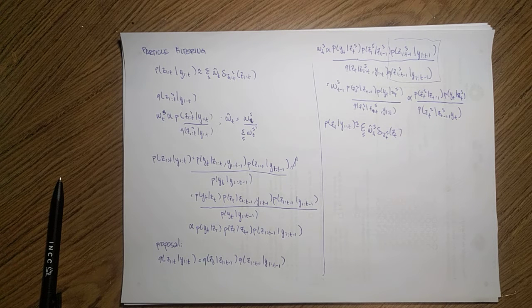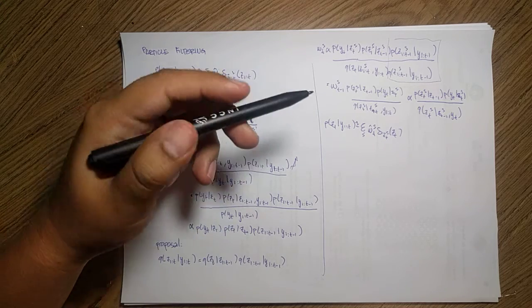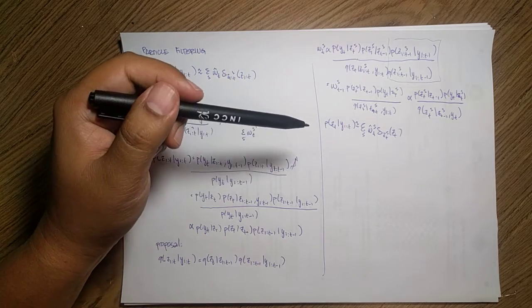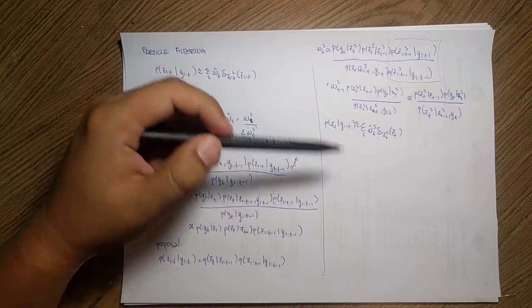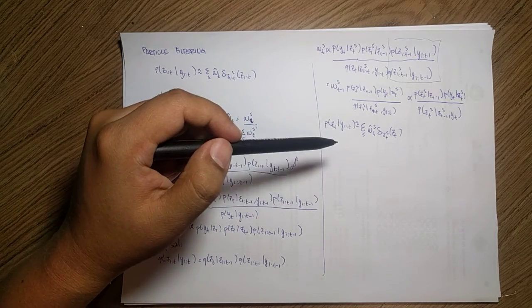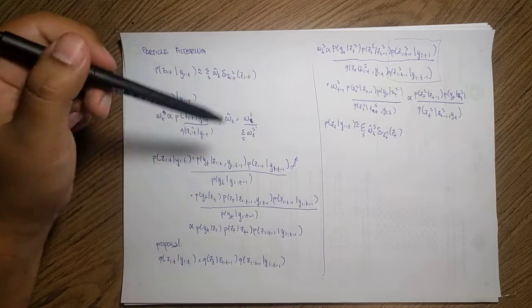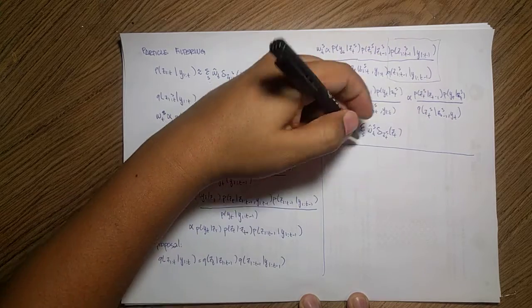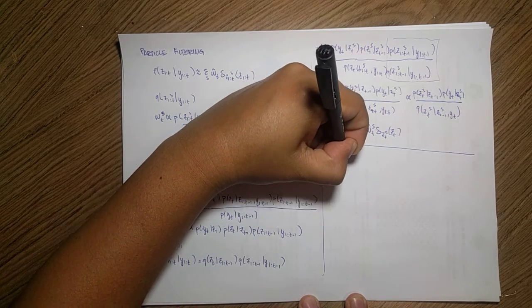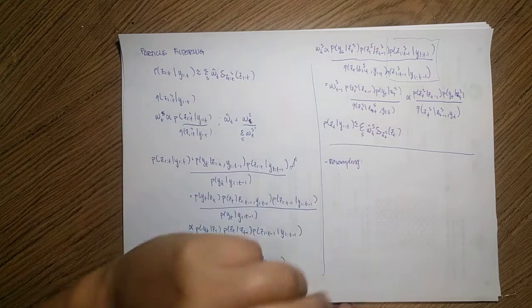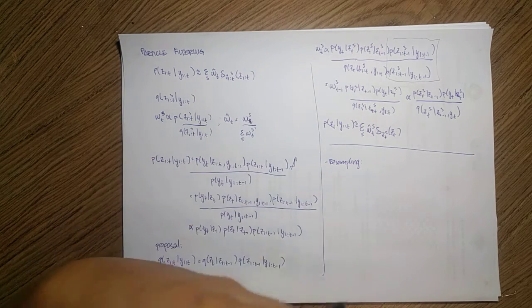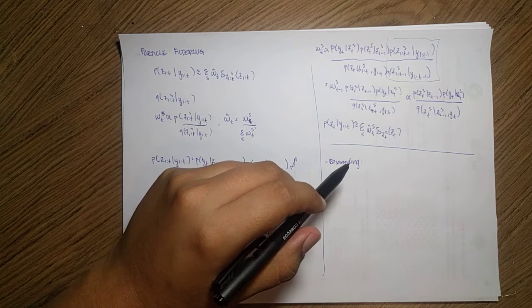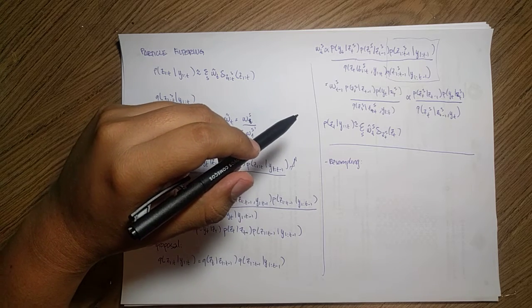One is the degeneracy problem, such that it will fail when we have particles with negligible weight. That means our weight is so small that it is not helping anymore. So we need to somehow forget those particles that are not helping anymore. So we have to propose two solutions to this. One is do resampling.